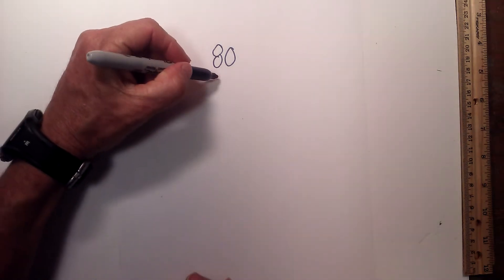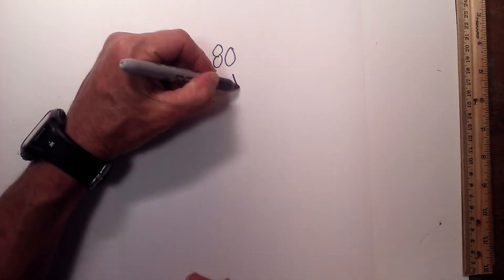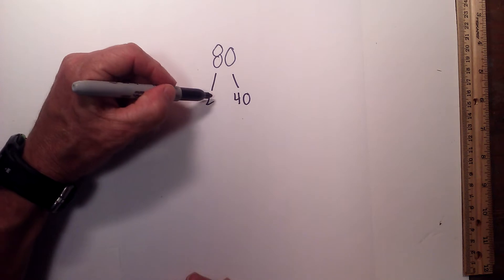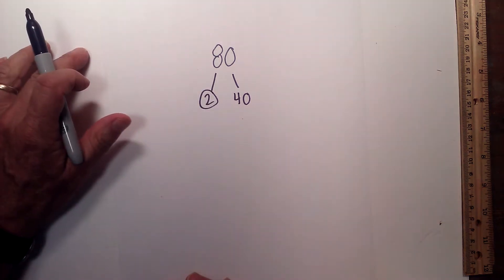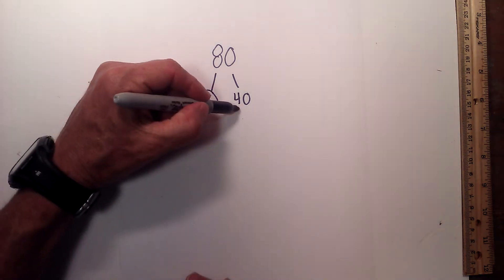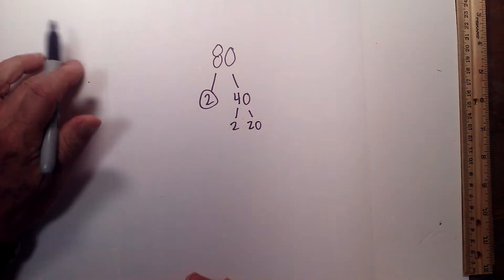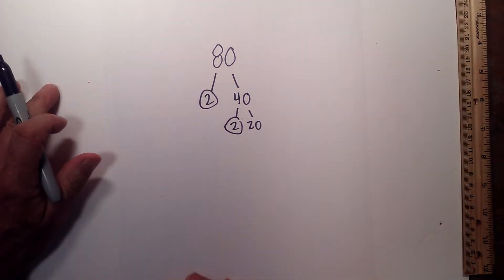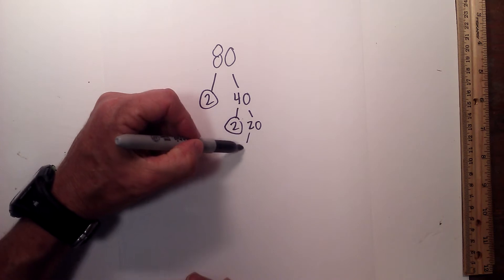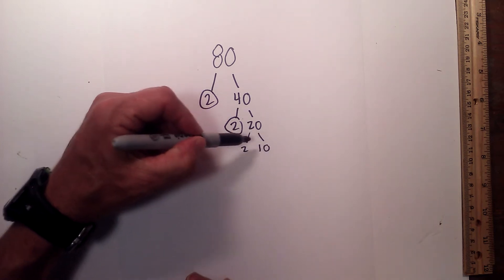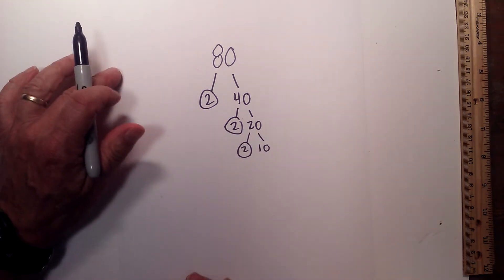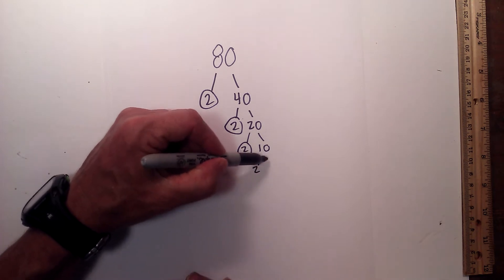Math and Science. We'll find the prime factorization of 80 and 99. Beginning with 80: 2 times 40 equals 80 — I'll circle the 2 because it is prime. Now 2 times 20 equals 40 — circle the 2 because it is prime. Now 2 times 10 — circle the 2 again, it is prime.